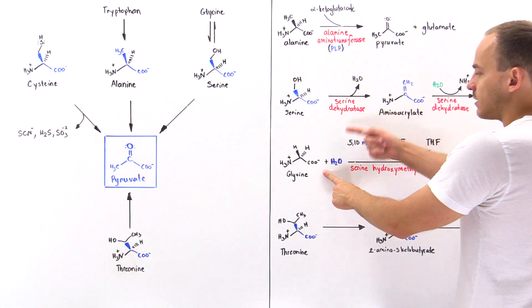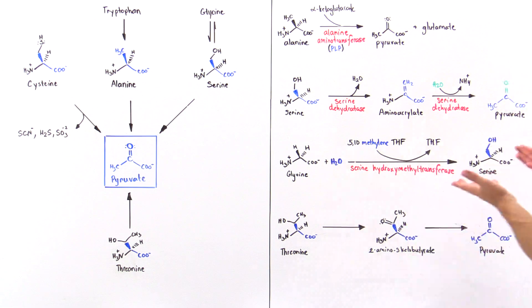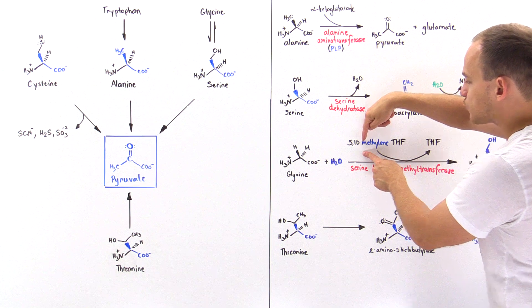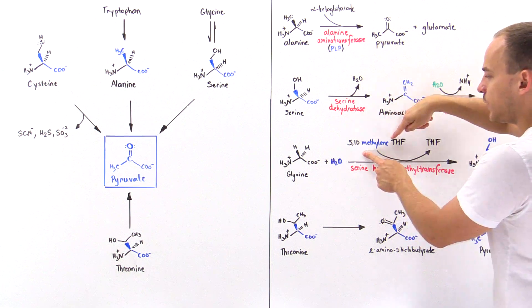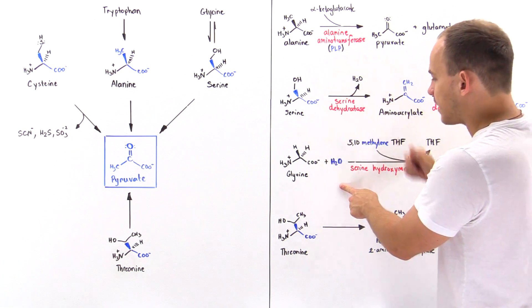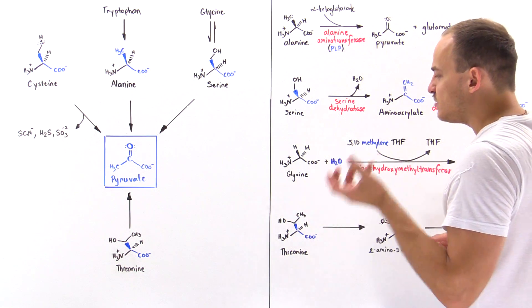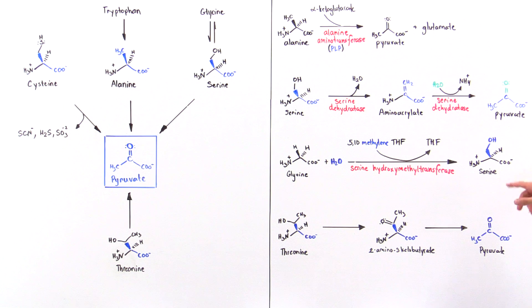What this enzyme does is it ultimately transfers this group here shown in blue, as well as uses the water molecule to actually attach that hydroxide group onto glycine. So ultimately we attach a hydroxymethyl group onto the glycine to form our serine. We also form the THF, the tetrahydrofolate, and then the serine basically follows these steps that we have on the board.